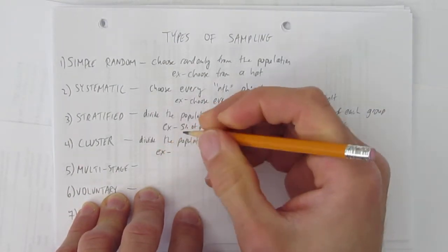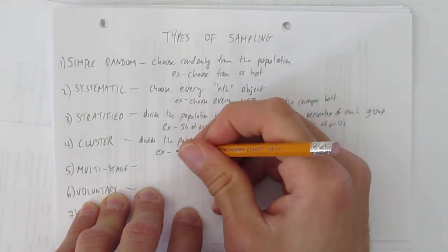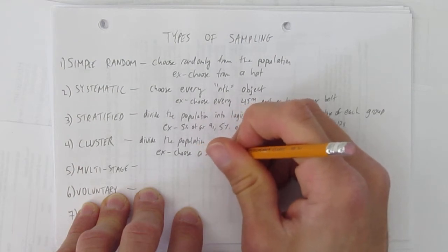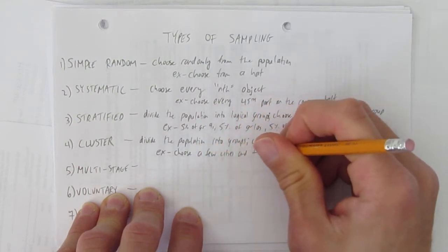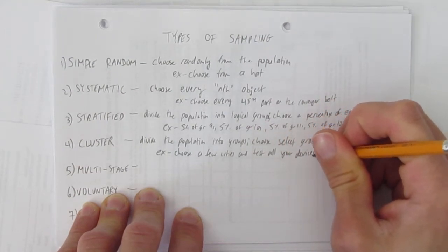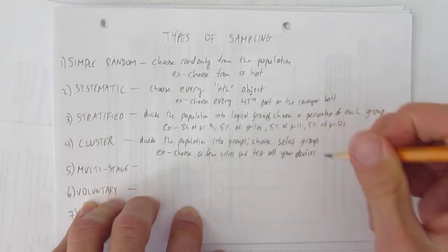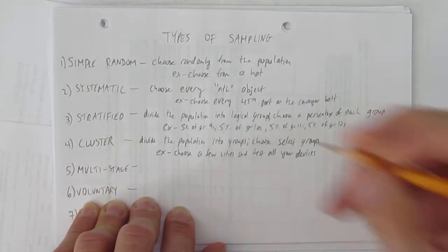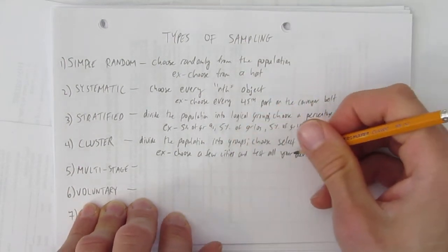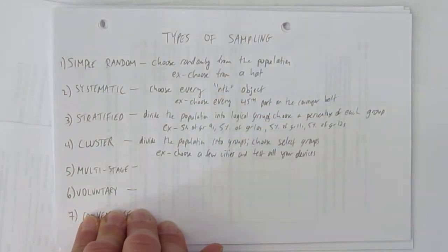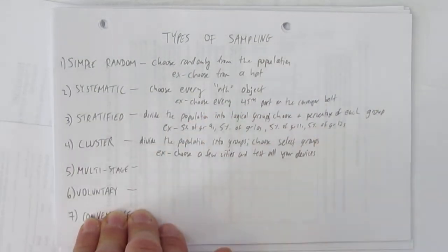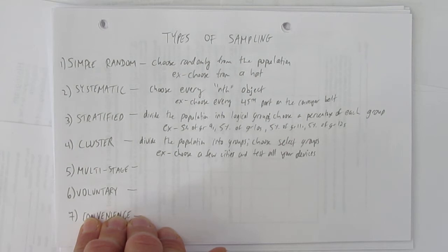So for example, if you had computers in a bunch of different cities, you would choose a few cities and test all your devices. So this one companies will do if they can't, maybe the computers are already out there, they can't recall them all, that would be way too expensive. Instead, they'll send testers to a few cities and test all the devices in those cities. But, selecting those cities could end up being biased, so be really careful about using cluster. It can really easily become biased.